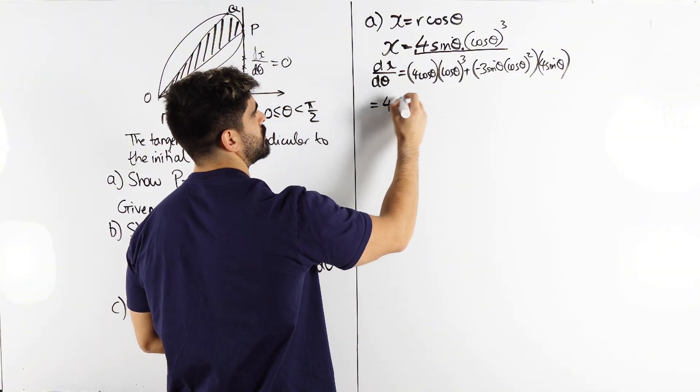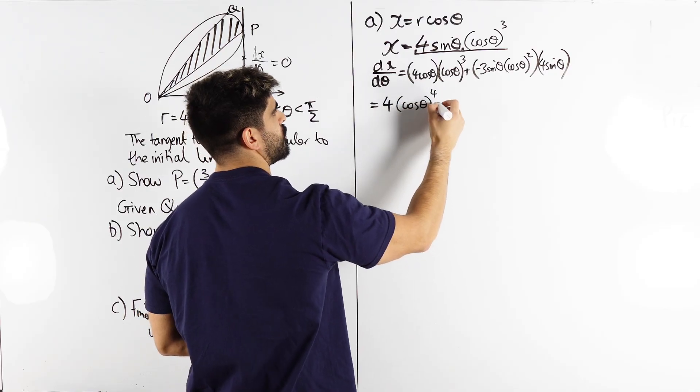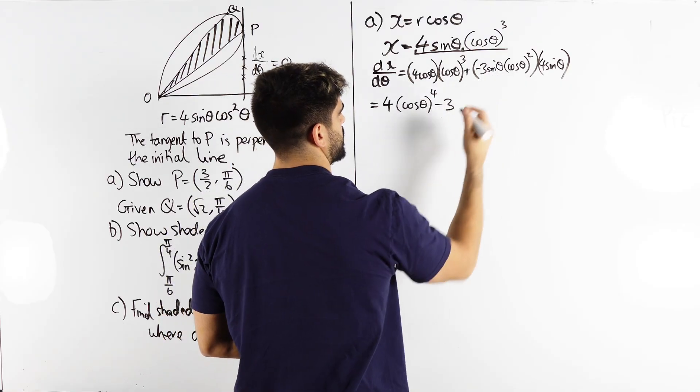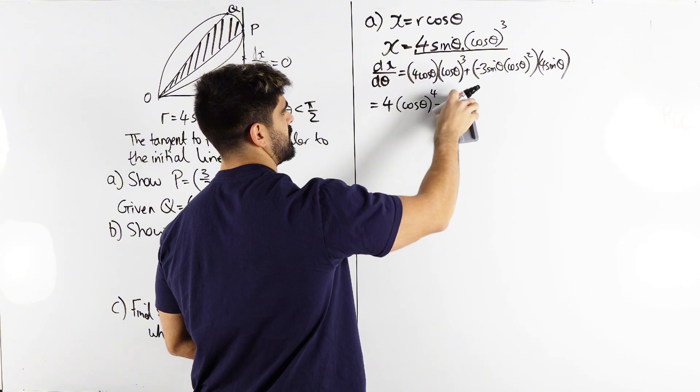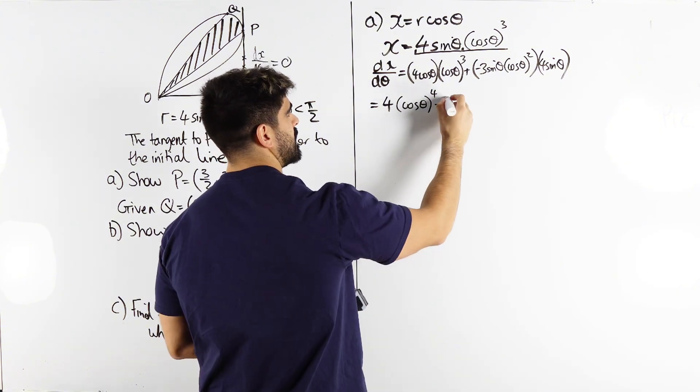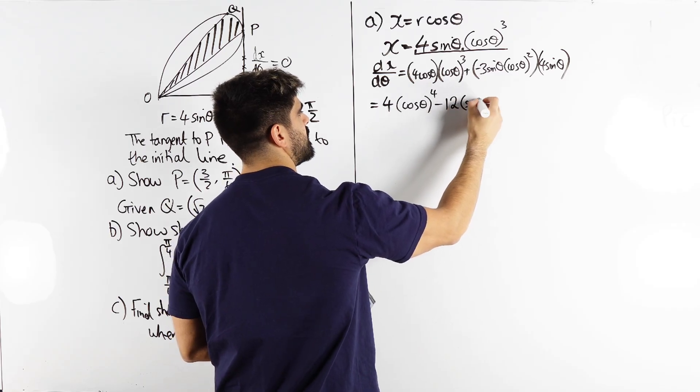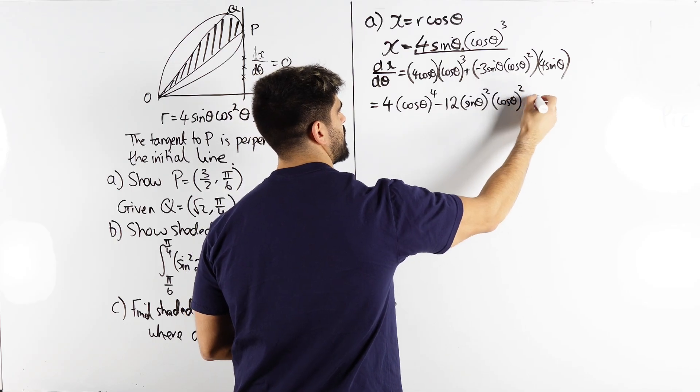We have four cos theta to the power of four minus three. Sorry no minus twelve. Even though when we can make equal to zero we can cancel out the fours. We have minus twelve sine theta squared cos theta squared is zero.